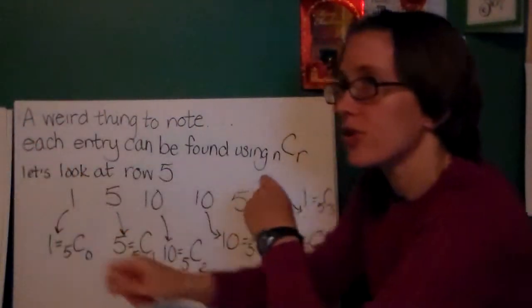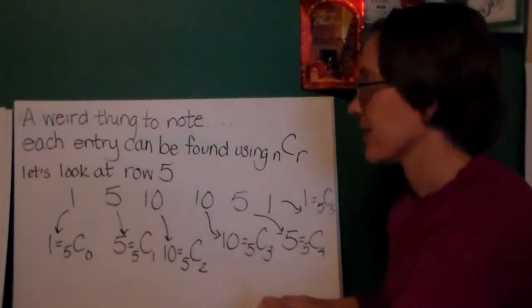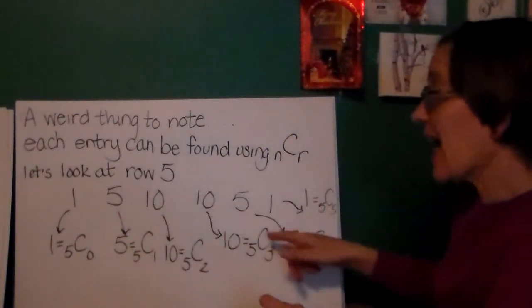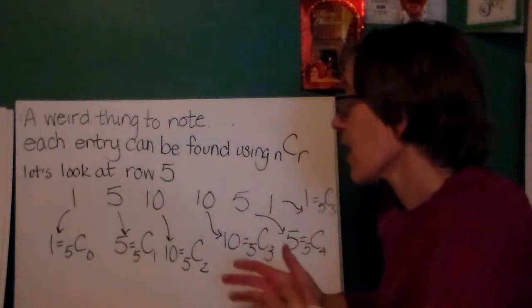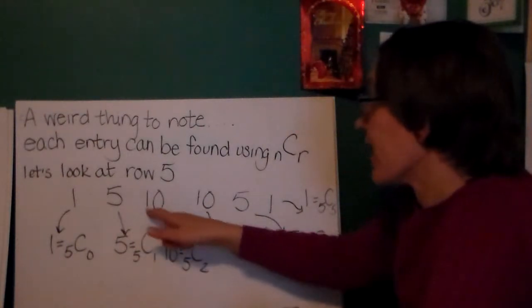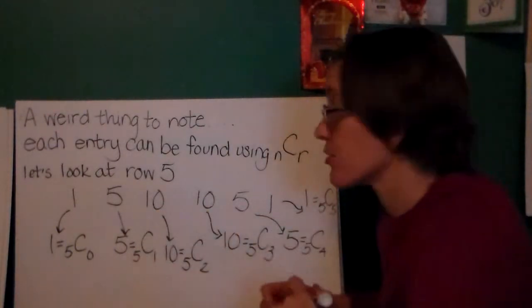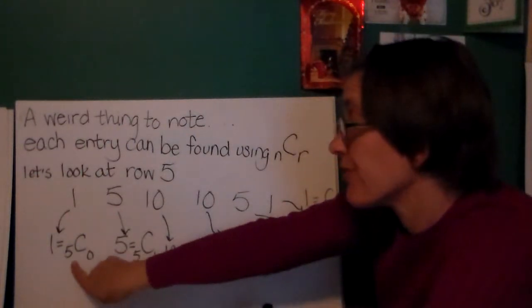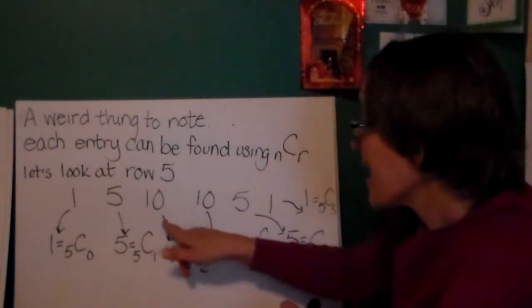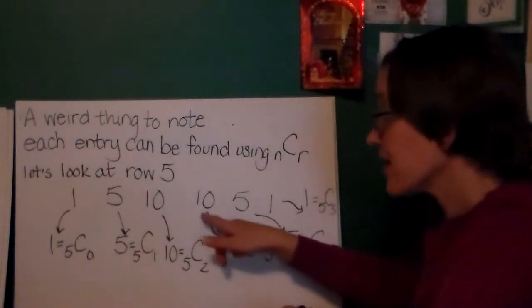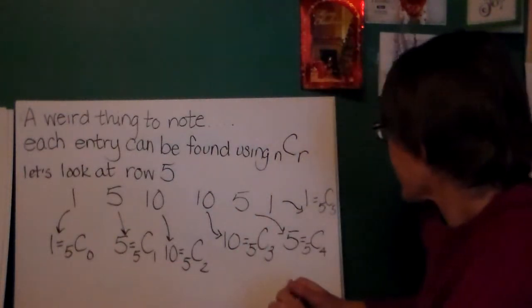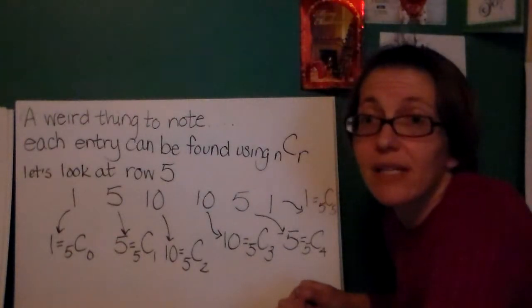So let's look at just one weird thing about Pascal's triangle. Each entry can be found using that nCr notation. So this is row 5 that would have come right after row 4. So if you wrote down row 4 and you do some addition, you can see that row 5 would be 1, 5, 10, 10, 5, 1. Six entries in all. Now 1 is equal to 5 choose 0. 5 is equal to 5C1. 10 is equal to 5C2. But 10 is also equal to 5C3. And 5 is also equal to 5C4. And 1 is also equal to 5C5.